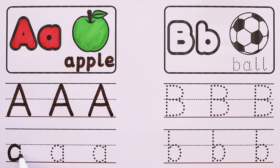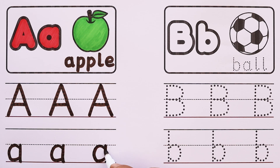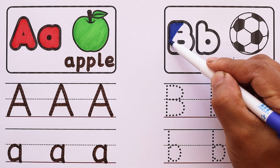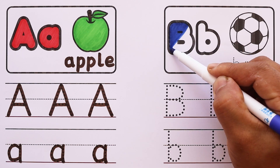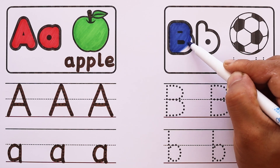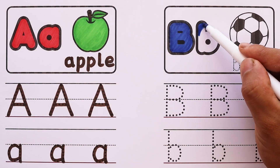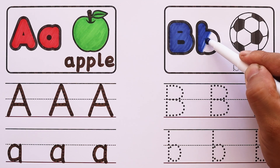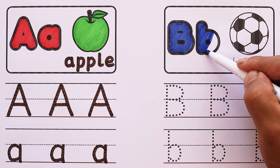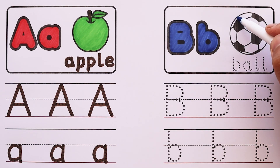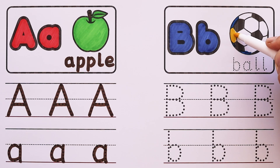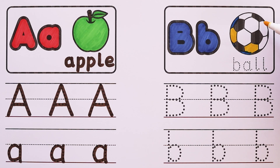Small letter A. Capital letter B. Small letter B. Dark blue color, yellow color. My ABCs — next time won't you sing with me.